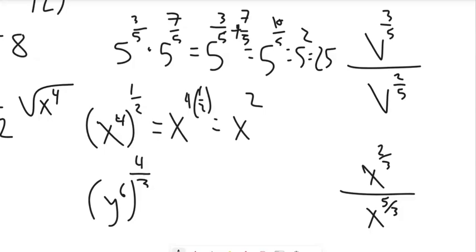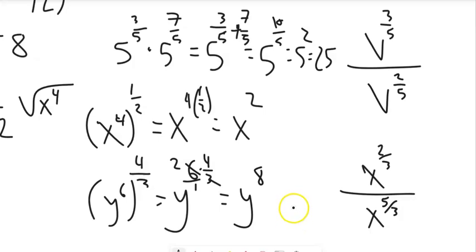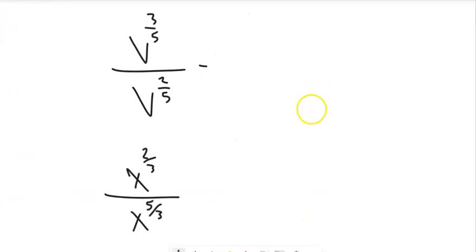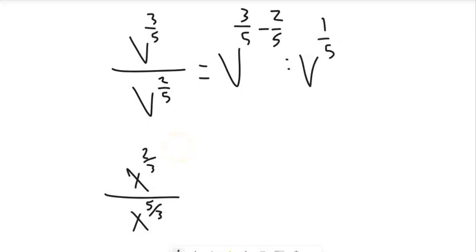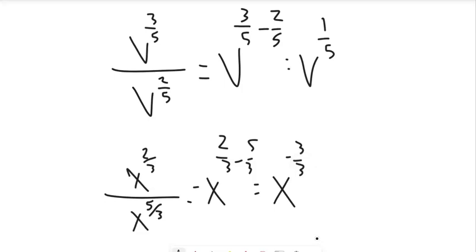For y to the 6th, to the 4/3: multiply 6 times 4/3. Think of 6 as 6/1; simplify to get 2 times 4 equals 8, so y to the 8th. For division, subtract exponents: v to the 3/5 divided by v to the 2/5 is v to the 1/5. And x to the 2/3 divided by x to the 5/3: 2/3 minus 5/3 is negative 3/3, which is x to the negative 1, or 1 over x.